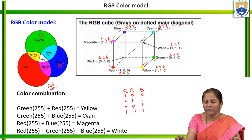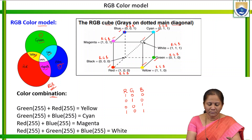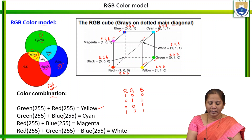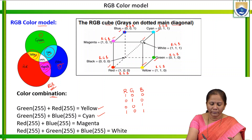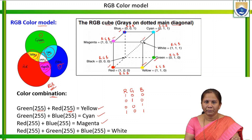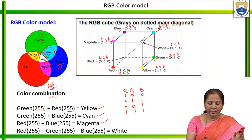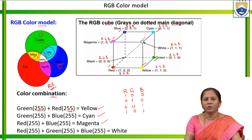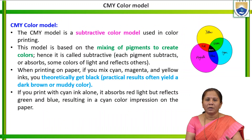This is the RGB cube with the gray on the dotted main diagonal. Green and red combined gives yellow; green and blue gives cyan; red and blue gives magenta; combining red, green, and blue gives white. The value 255 represents the maximum value — for example, 255 for red and 255 for green means equal maximum quantities. When all three colors have value 255 — maximum levels of red, green, and blue — white is produced.